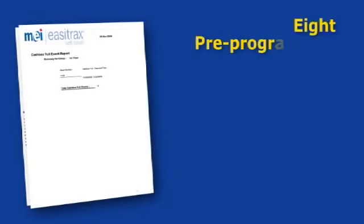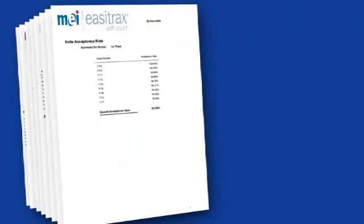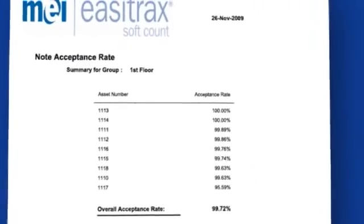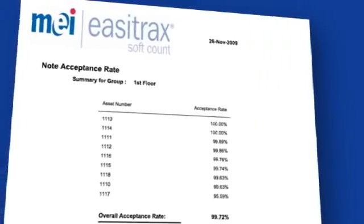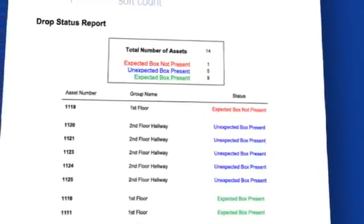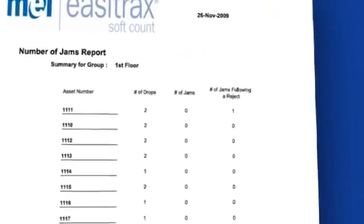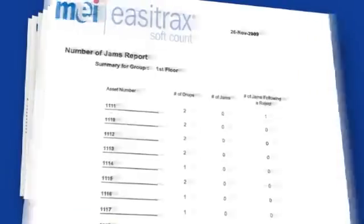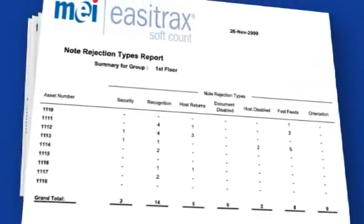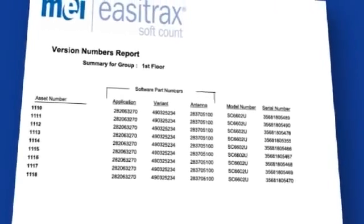Performance metrics are then downloaded into eight pre-programmed reports designed to improve decision making and maintenance practices. Each is designed to drive action. Following are five examples. The acceptance rate report provides performance data and is a key indicator for maintenance needs. The drop status report confirms cash boxes that were and were not dropped compared to the daily schedule. The jams report identifies potential larger problems by highlighting note jams. The reject type report illustrates why a reject occurred, identifying potential risk. The version report lists the latest software to ensure performance and help avoid jurisdictional fines.